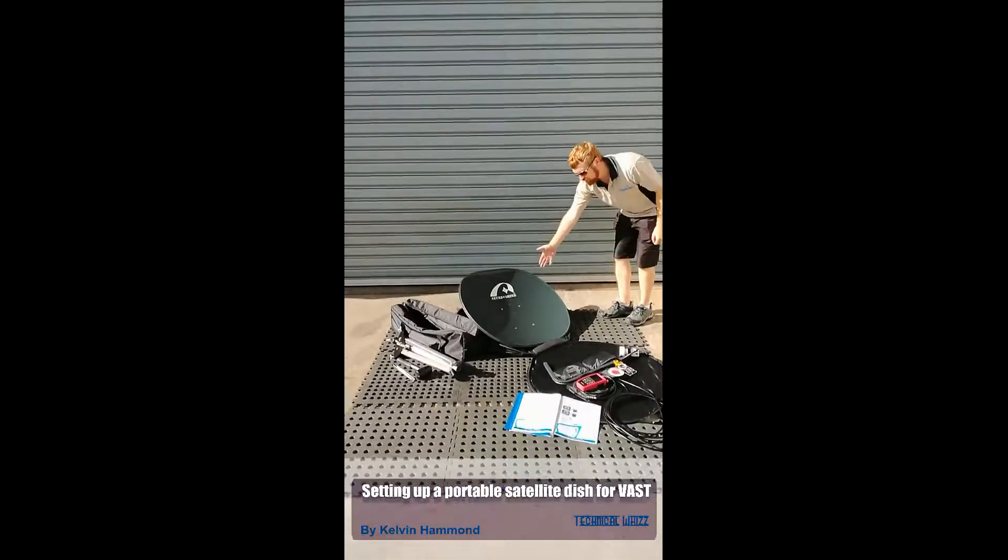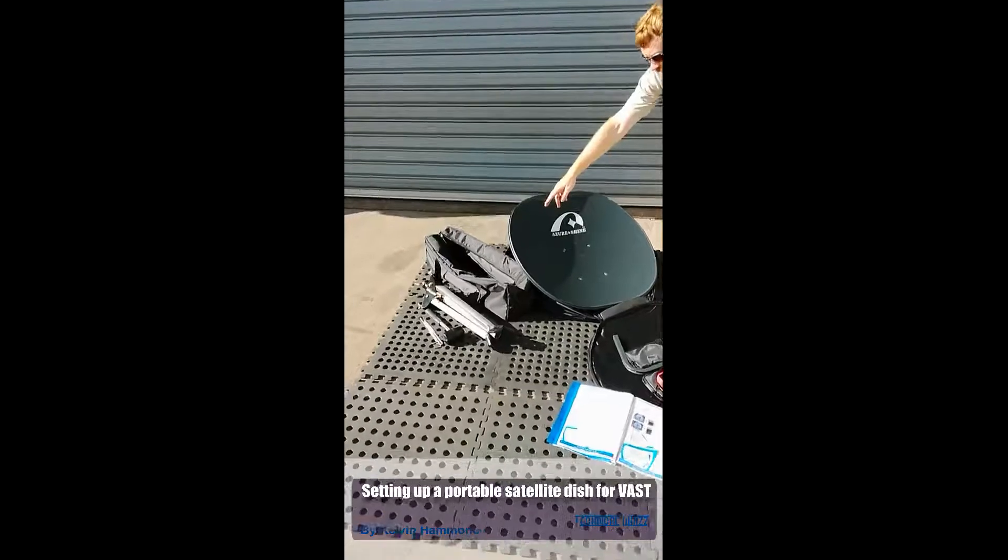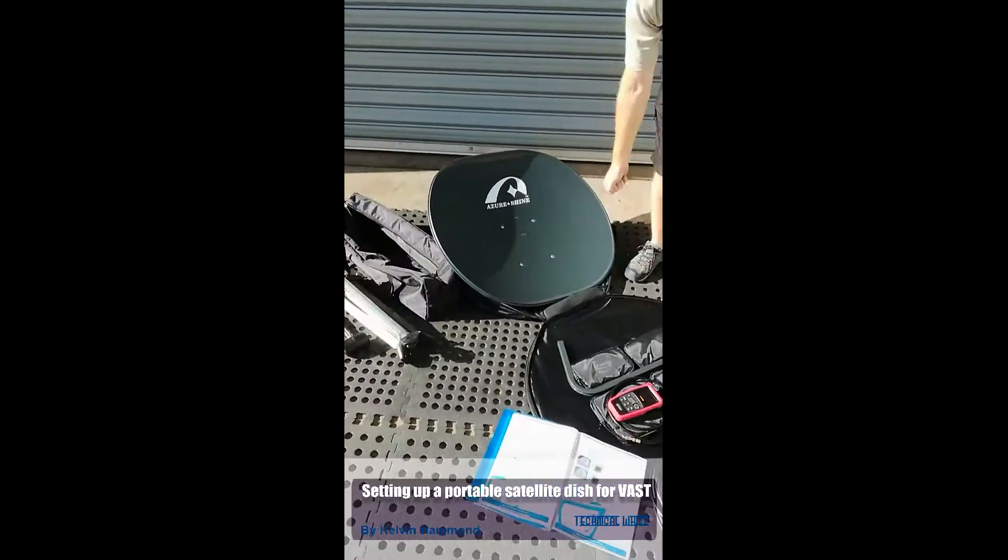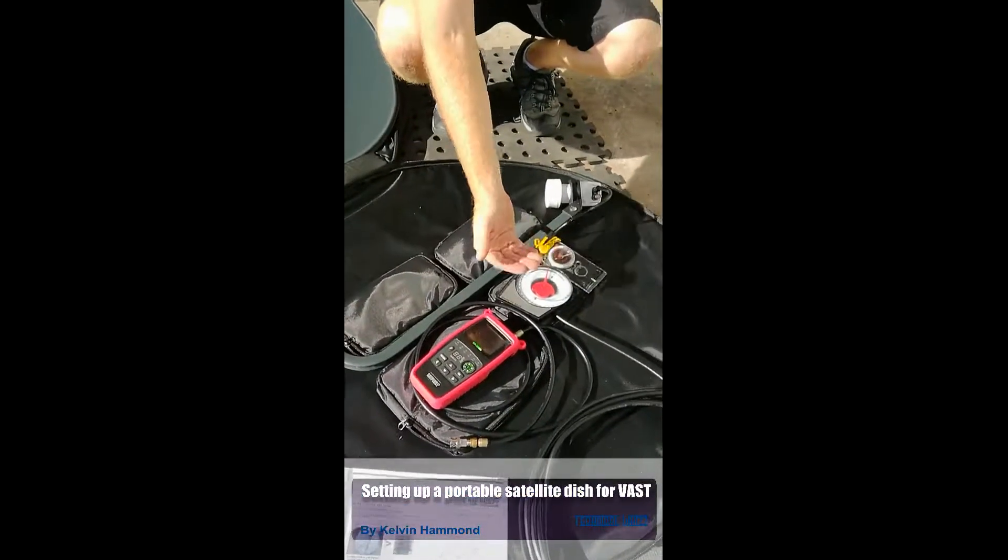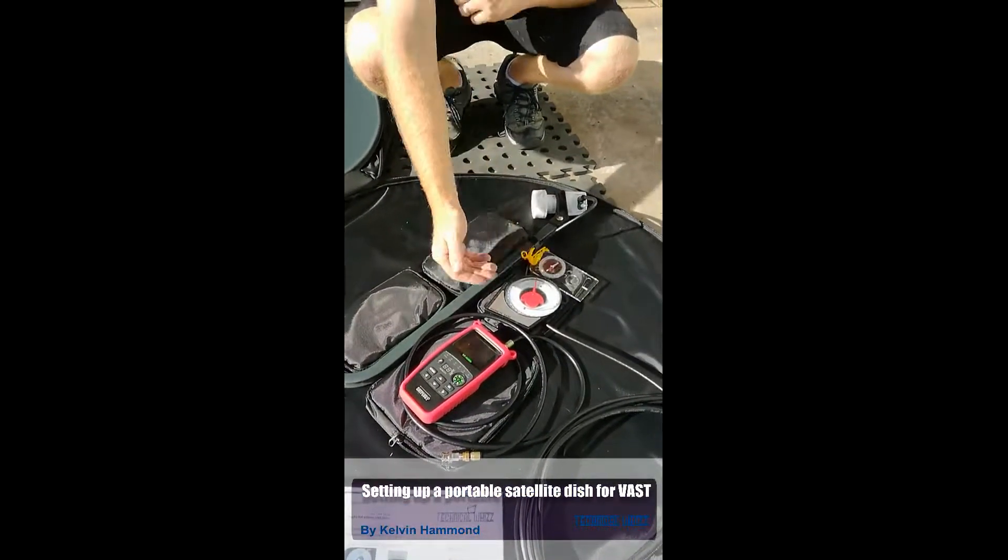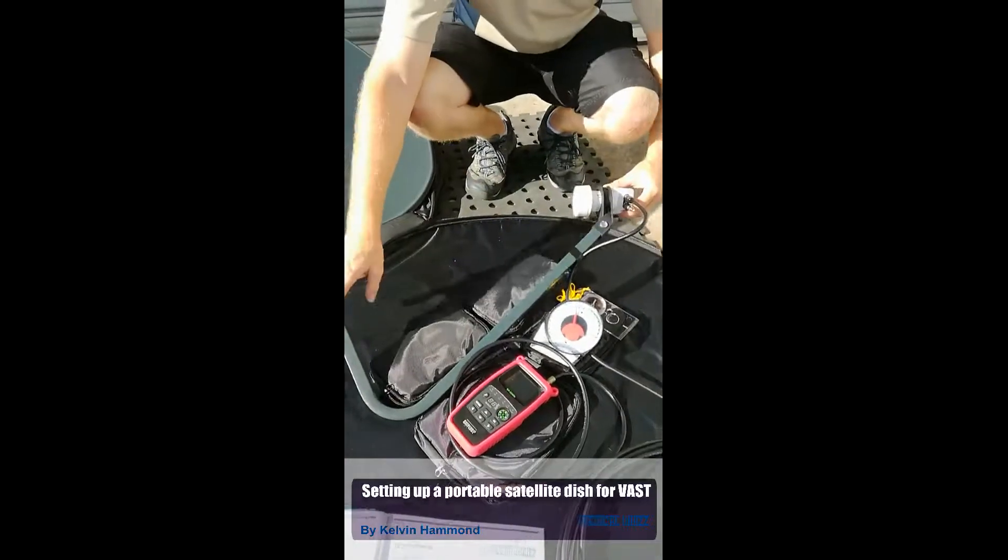We have your satellite dish here. We have your tripod, some pegs to secure to the ground and a hammer. You've got the installation manual here. We have the satellite meter, an angle finder and a compass, an LNB and LNB arm.